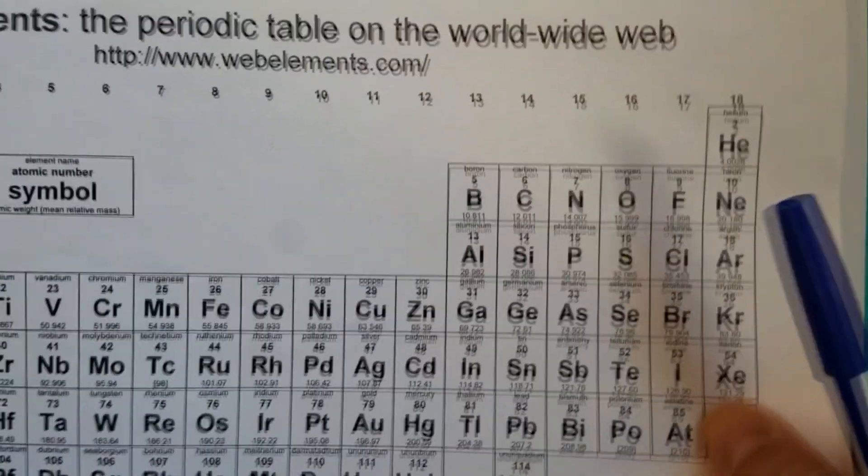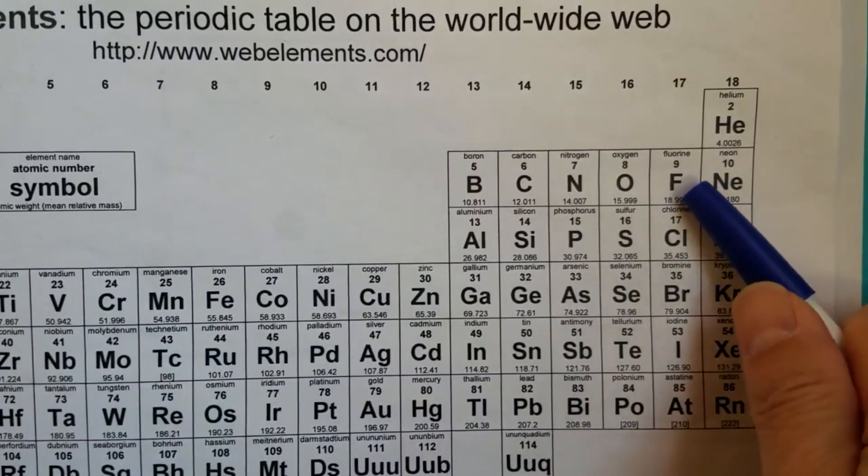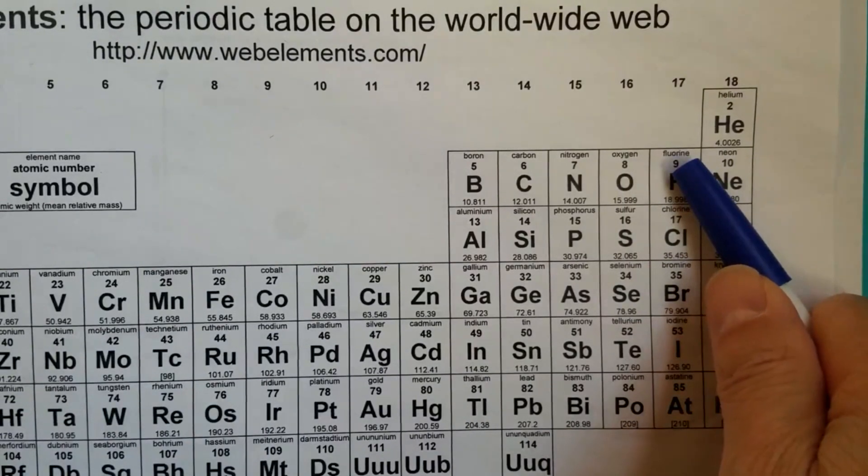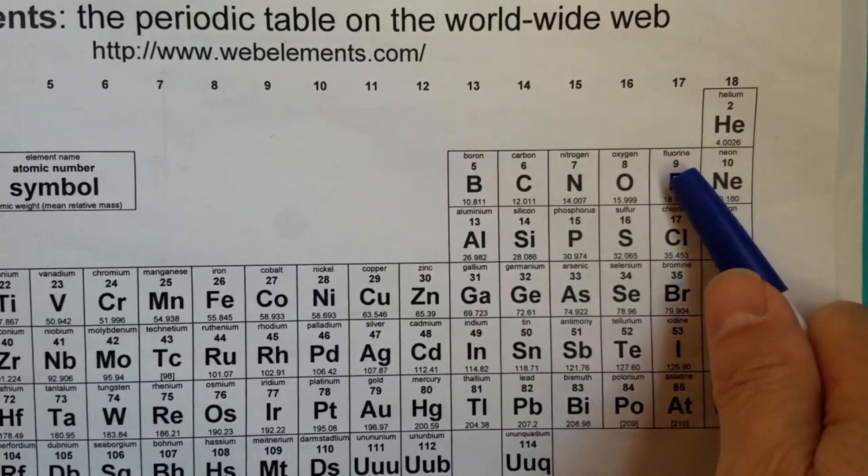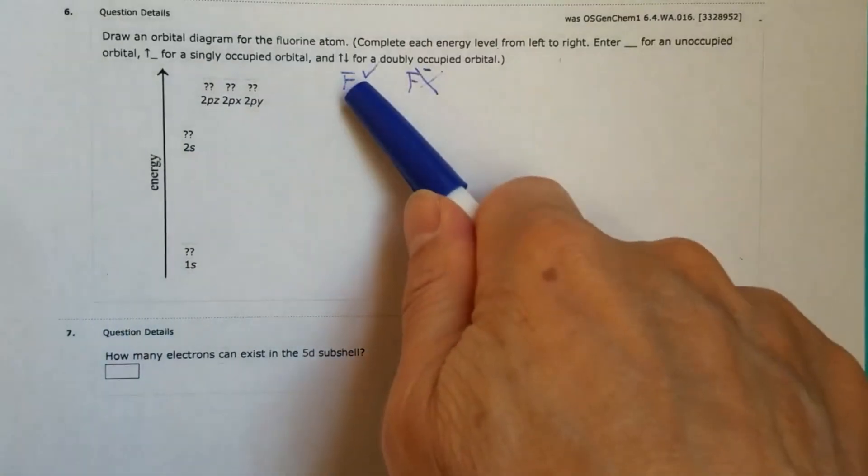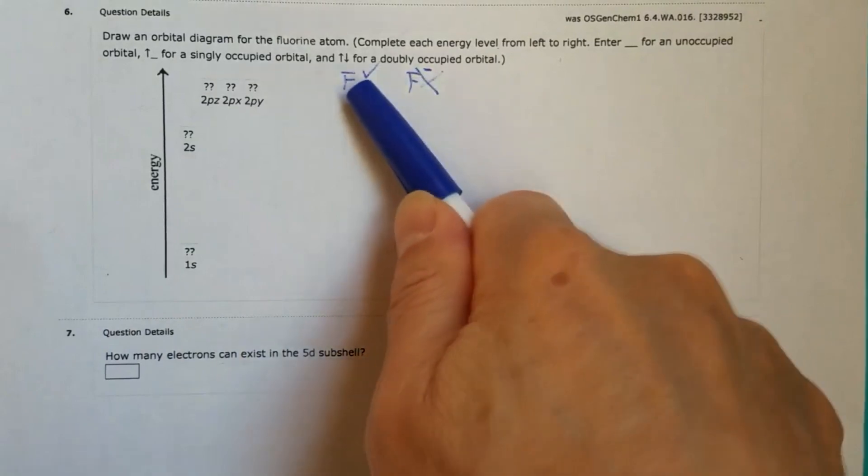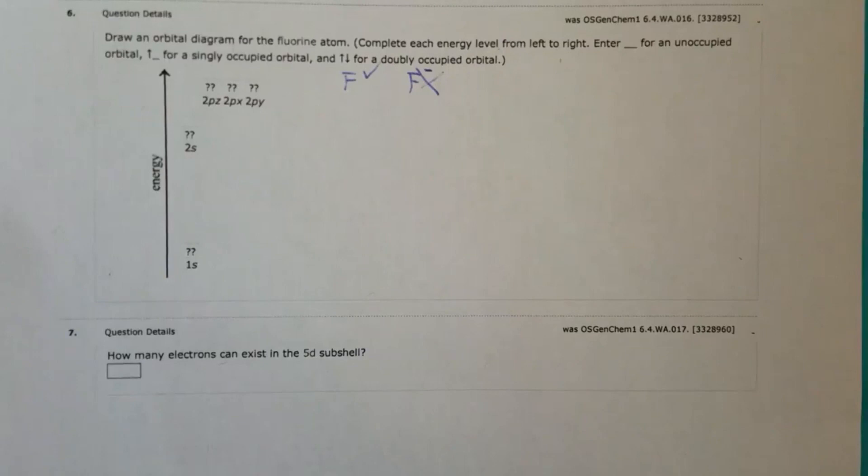Every time we take tests, a copy of the periodic table will be given and here fluorine, that's number nine, which means it has nine electrons. Okay, so the atomic number is nine. The number of protons is nine. The number of electrons for fluorine atom, not the fluoride, is also nine. We have nine electrons.